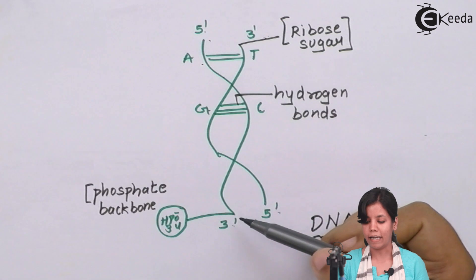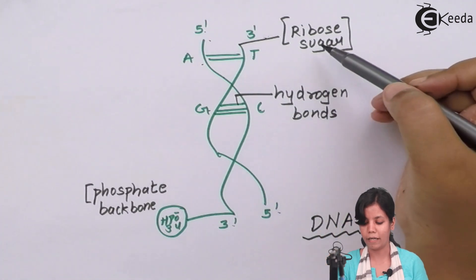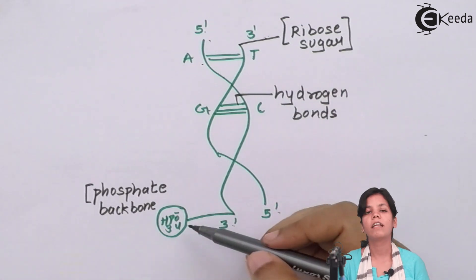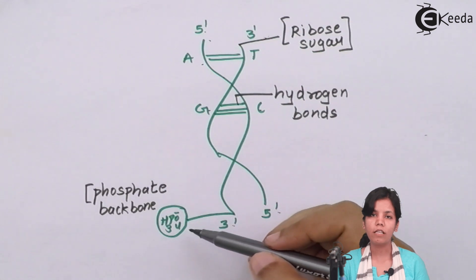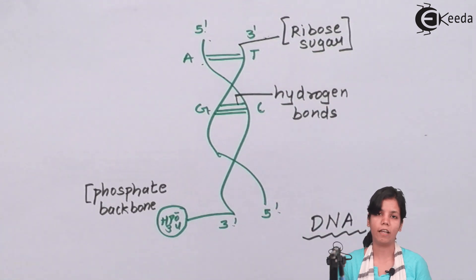Now along with this, DNA has ribose sugar or pentose sugar, phosphate, its backbone. So this was, students, DNA or deoxyribose nucleic acid. I hope that somewhere you all are clear what DNA is and how DNA works. Now in the later part of the chapters, we'll study what DNA does and what is the reason that DNA is like this. Thank you.